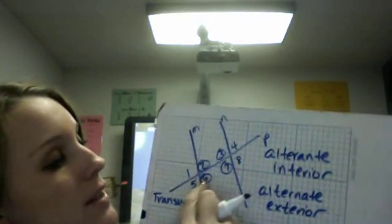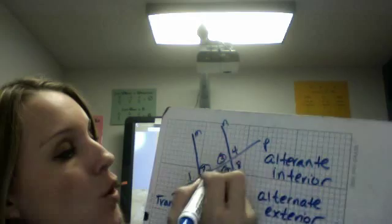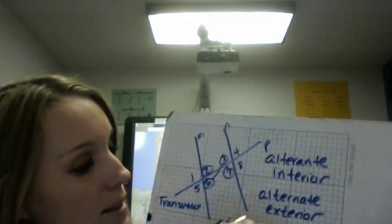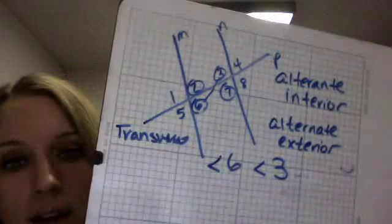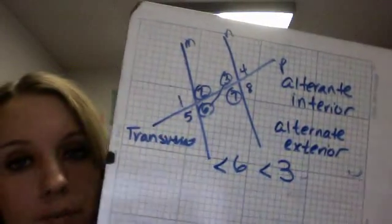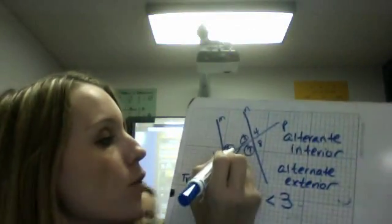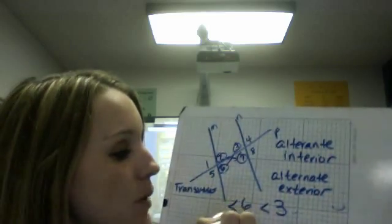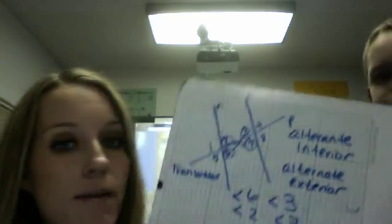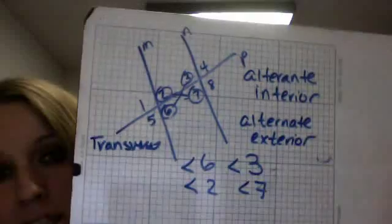So that means that 6 and 3, see how they go across? So angle 6 and angle 3 are alternate interior. Also, going the other way, it's 2 and 7. So angle 2 and angle 7 are alternate interior angles.